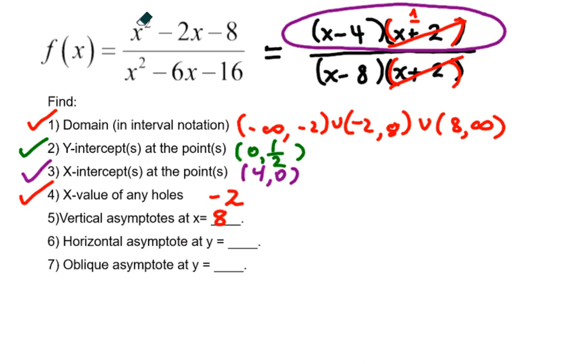Here we have the degrees the same, and that's the other case where you can have a horizontal asymptote. If the top was smaller in degree than the bottom, we would say that the horizontal asymptote was just the x-axis, or y equals 0. But here, we don't have that. We have the same degree on the top and the bottom polynomials.